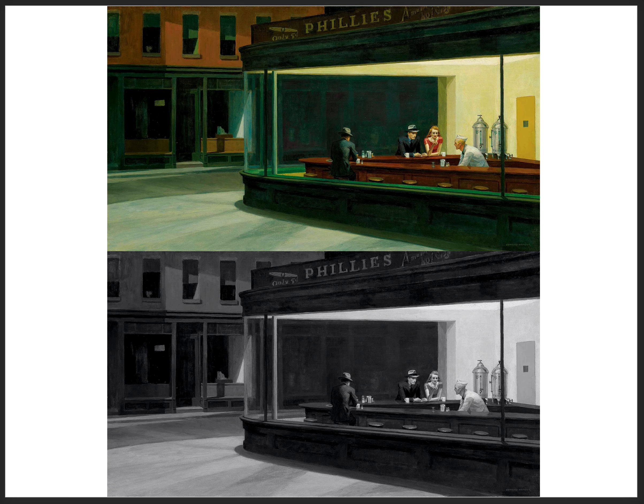Here we see the famous painting Nighthawks by Edward Hopper, alongside a black and white photograph of that image — we have removed all aspects of color except for value. Value is one of the most powerful characteristics of color under our control when mixing. Many artists think about just using value first, and then think about what specific hues or colors those values should be.